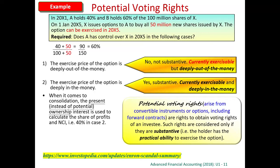Once we consider this potential voting rights, we say that A actually has got the power. We consider potential voting rights now, but naturally many years before this, we did not consider this kind of option. There was a very famous case — we call it the M1 case.